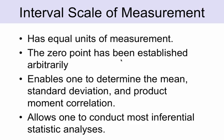Comparing that to the interval scale of measurement: an interval scale has equal amounts of measurement, so from point 1 to 2 or 2 to 3 there is considered an equal amount from point to point. But the zero point has been established arbitrarily — zero itself doesn't really mean zero in the sense of nothing. The example is temperature: zero on Fahrenheit means one thing, but on a Celsius scale means something else. By having an interval scale, I am allowed to determine the mean, the standard deviation, and things like the product moment correlation, and I can conduct inferential statistical analyses.